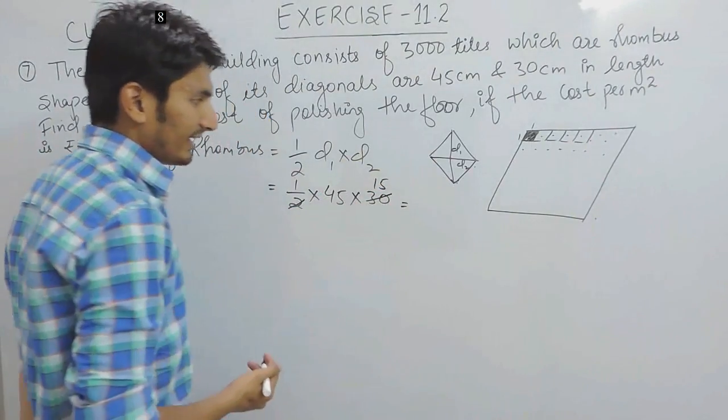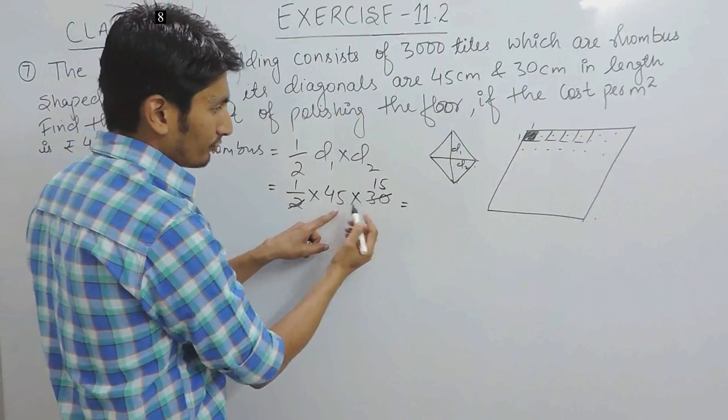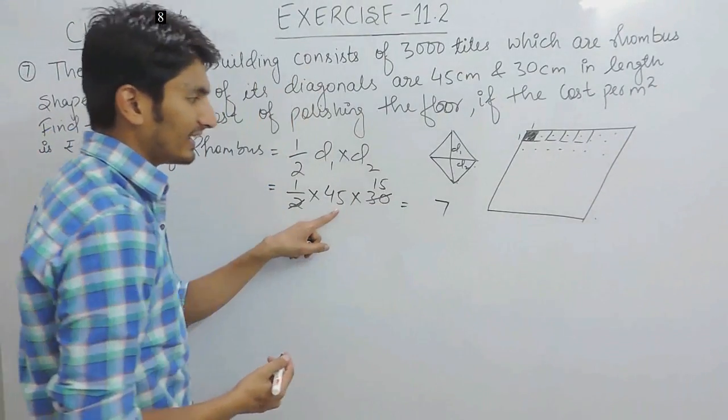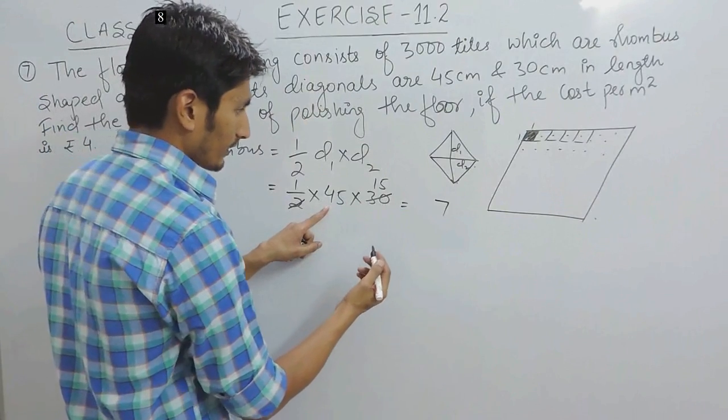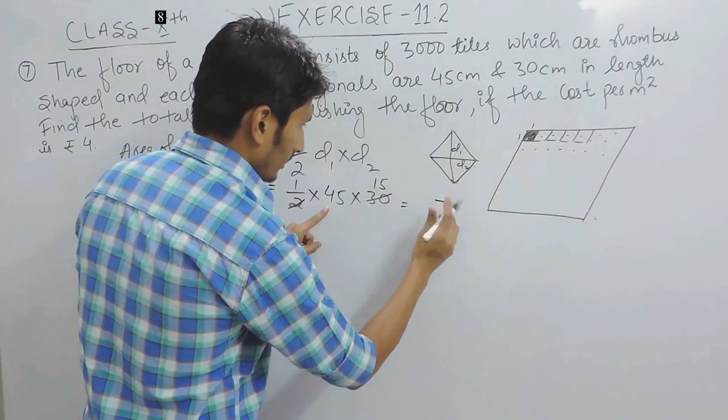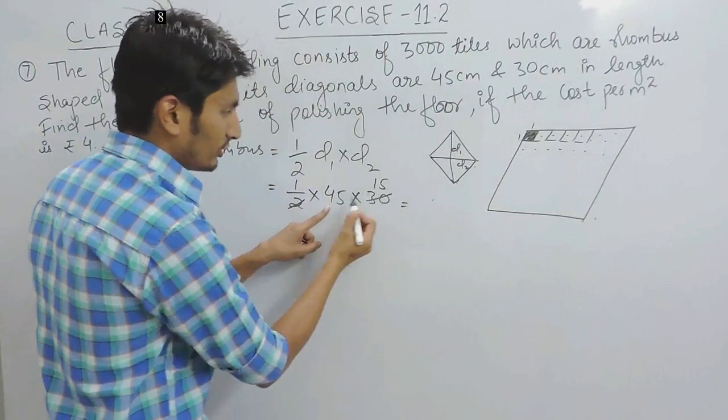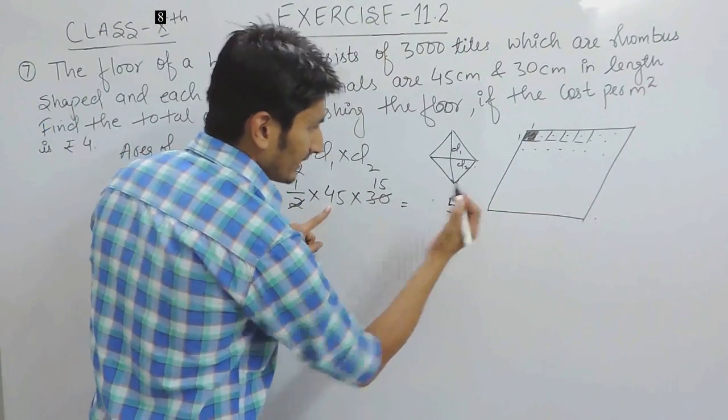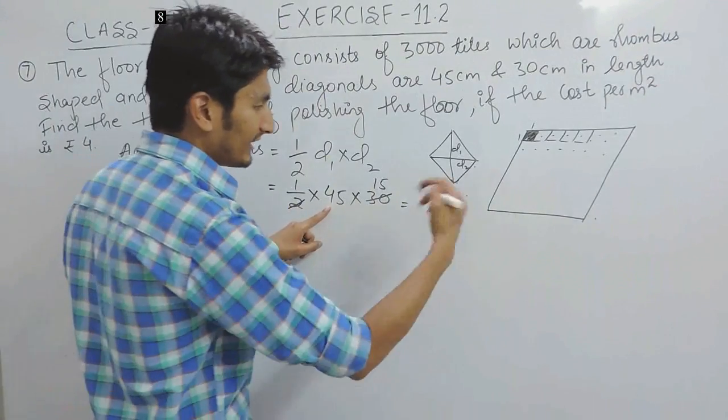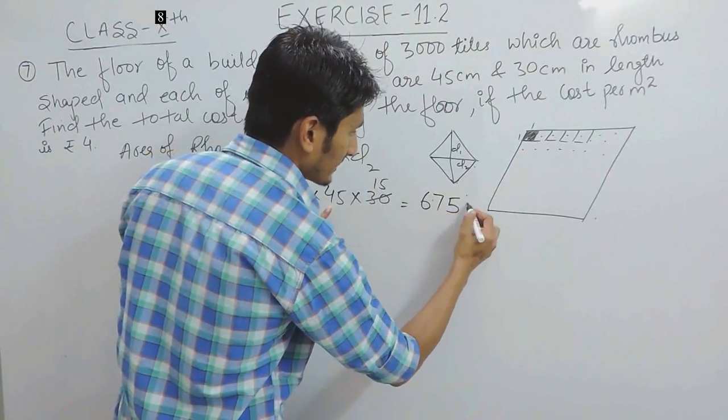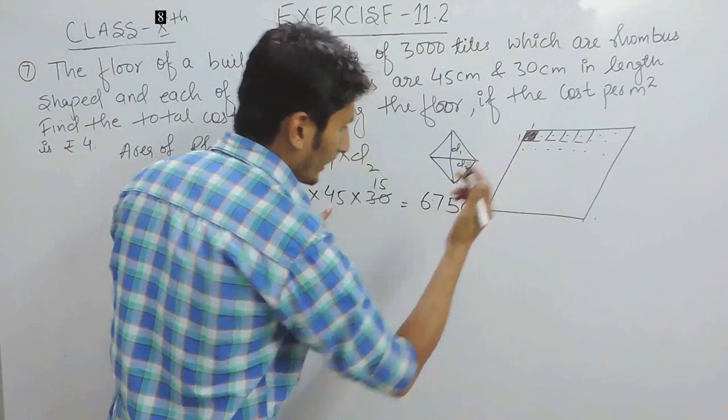The area will be: 15 into 5 is 75, carry 7, and 15 into 4 is 60 and carry 7, so this will be 675 cm2. So this will be the area of 1 rhombus.